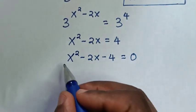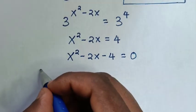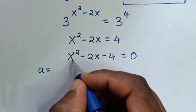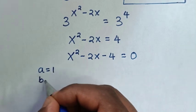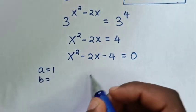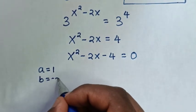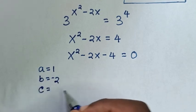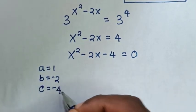Now to solve this quadratic equation, a is equal to the coefficient of x square which is 1, b is equal to the coefficient of x which is negative 2, and c is equal to the constant which is negative 4.